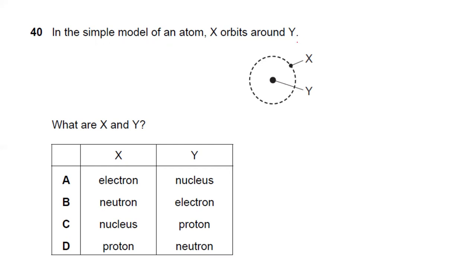Question forty (final question): in a simple model of an atom, X orbits around Y. The electron orbits around the nucleus, so X is an electron and Y is the nucleus. Answer A is the best answer. That concludes this exam walkthrough — I hope you enjoyed it. Best of luck in your exams. Thank you for listening, bye!